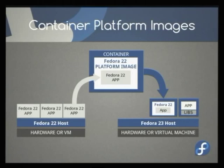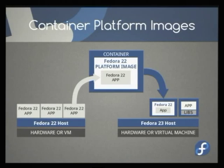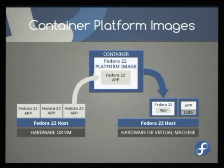We can take a platform container base image based on Fedora 22, put our application inside of that container, and then run that container on Fedora 23. This enables us the ability to take application runtimes away from being bound to the host in a way that allows us to not have to duplicate the operating system. We don't need to duplicate the kernel and the entire file system tree and glibc and all of these different things.